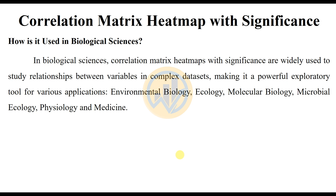Now, how is it used in biological science? Correlation matrix heatmaps with significance are widely used in biological science to study relationships between variables in complex datasets, making it a powerful exploratory tool. Applications include environmental biology, ecology, molecular biology, microbial ecology, physiology, and medicine.